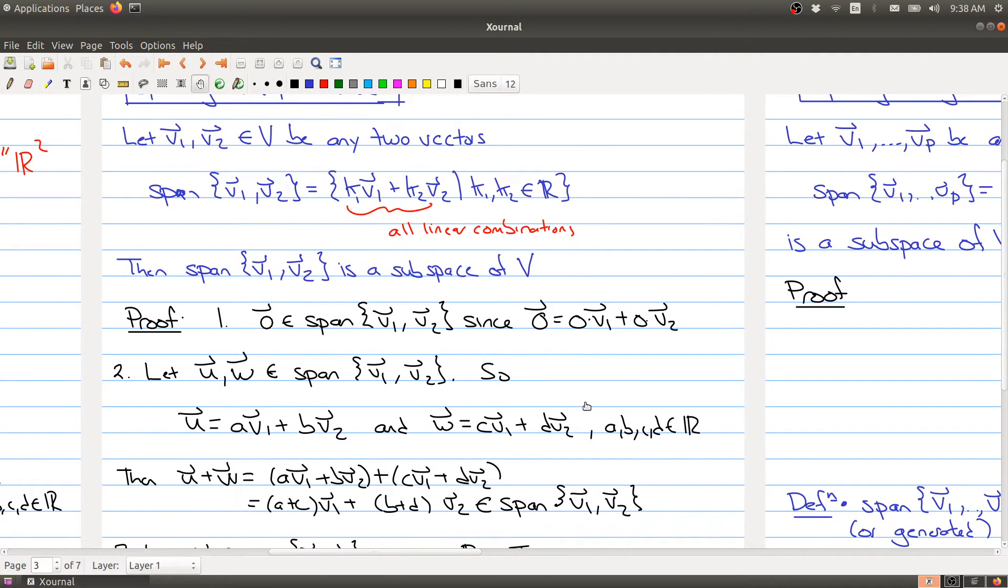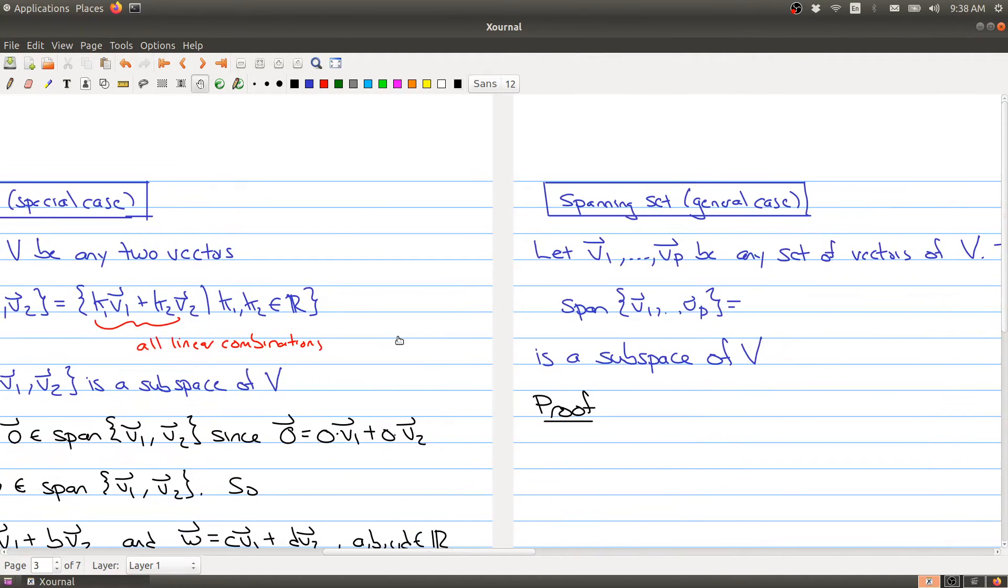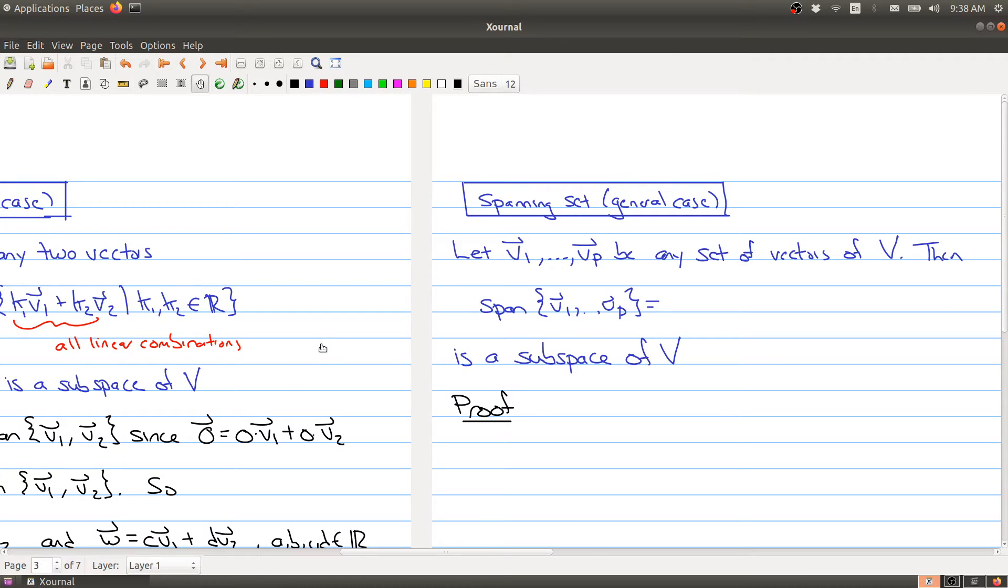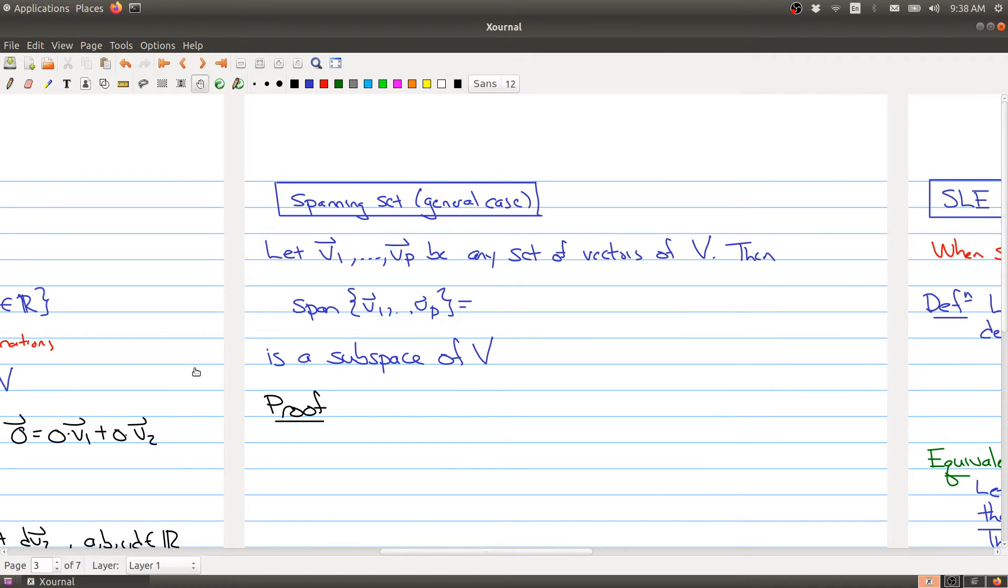Now, if you stare at this for a second, you notice that we didn't actually use anything special about the number 2. We could have had one vector and the proof would work the same. We could have had 10 vectors, we could have had 10 million vectors. And the proof would still work the same. So we have the general case, which is stated right here.